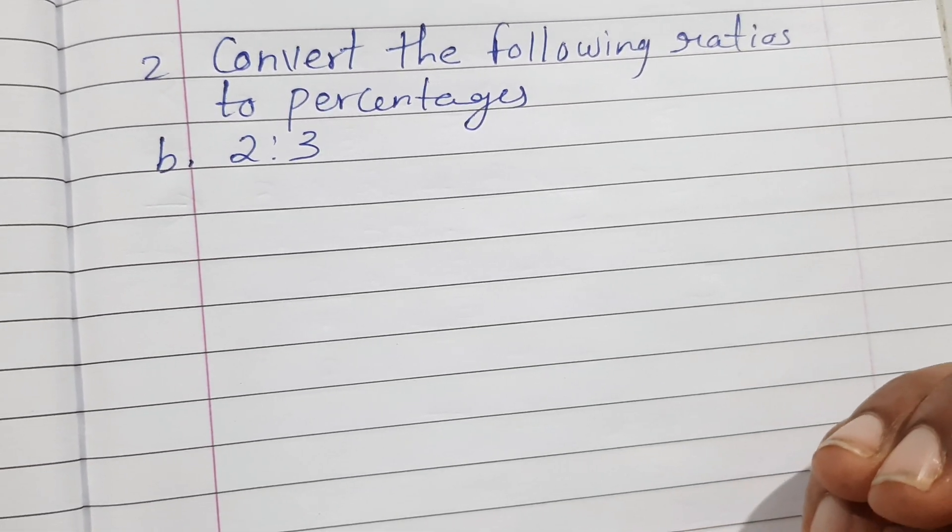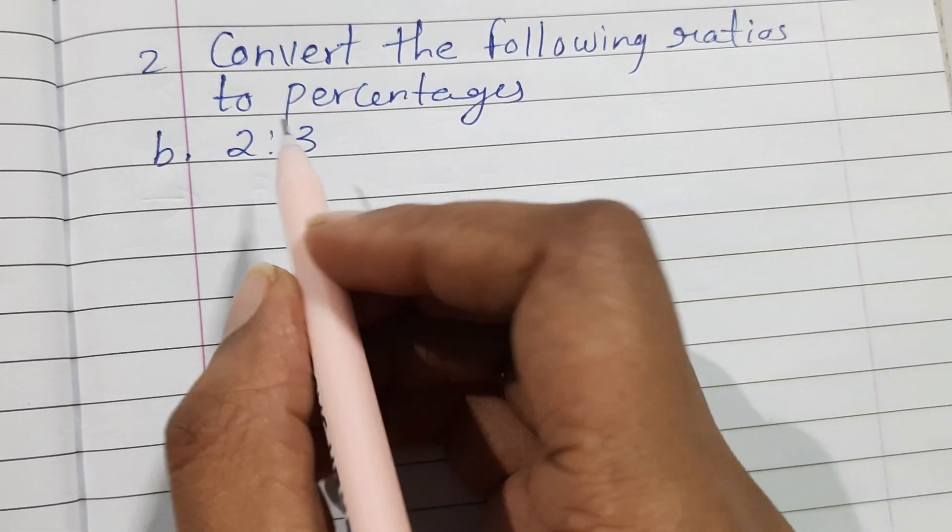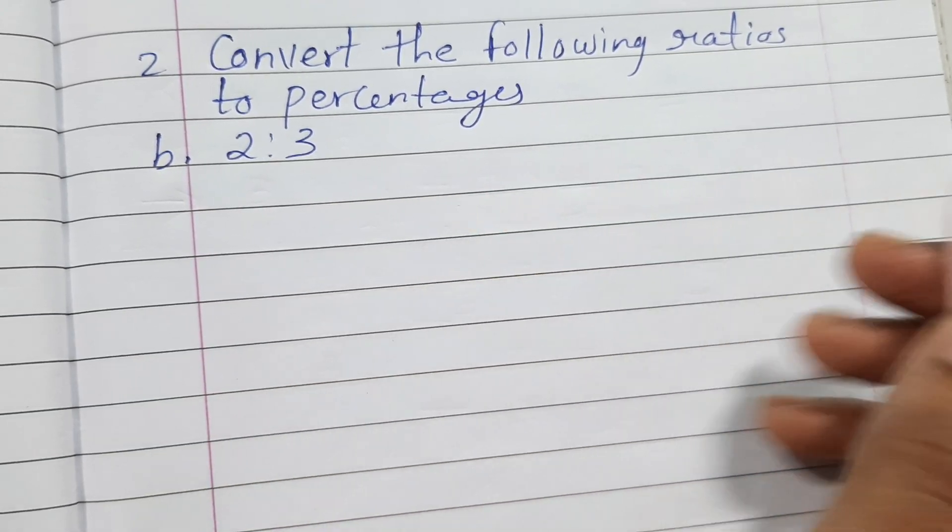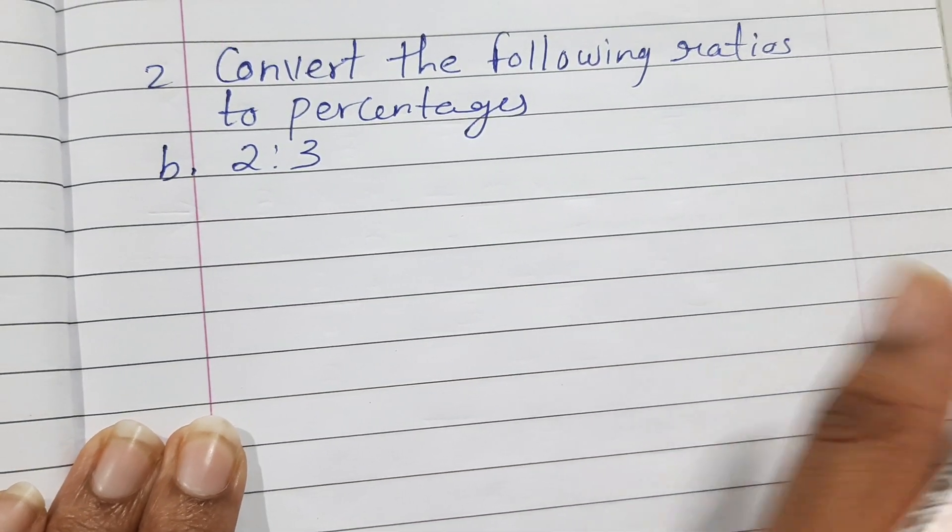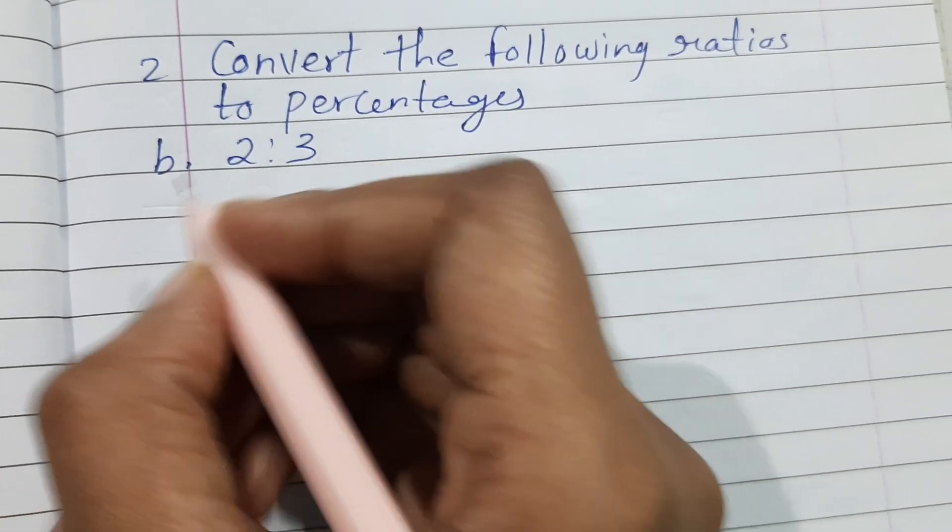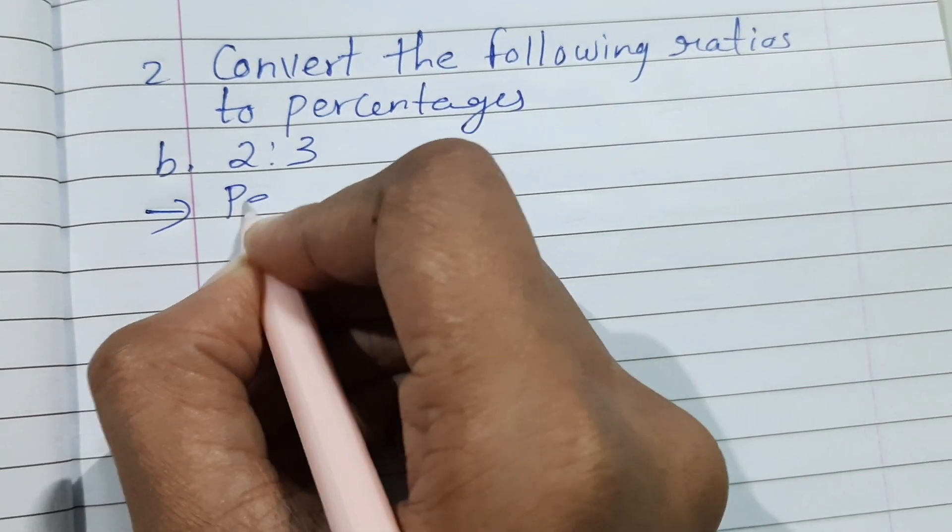Okay, the question is taken from class 8 mathematics from the comparing chapter. Convert the following ratios to percentages: 2 is to 3 is given. So let us see how to convert the following ratios to percentages. Now this is given in ratio form, right? So write down percentage.